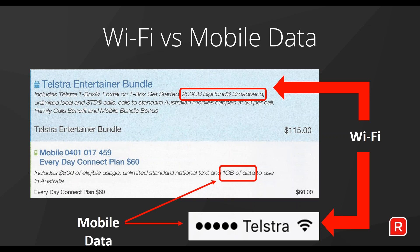A question I often get asked is: what is the difference between Wi-Fi and mobile data? The best way to explain that is to show you on an example telephone bill. This is a Telstra bill divided into two sections. The top section in blue has a 200 gigabyte Wi-Fi allowance to be used in my home. To access the internet I have to access it via a modem. Wi-Fi is the ability to connect to the internet via a modem.